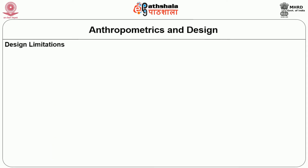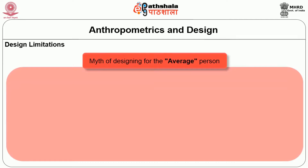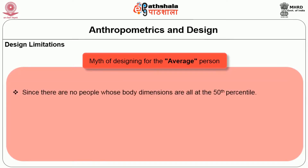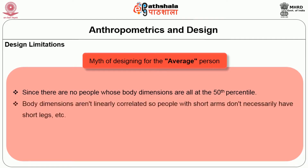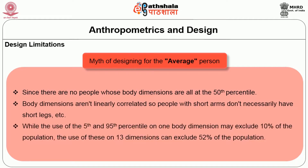What is the relationship between anthropometrics and design? First, let's understand design limitations. There is a myth of designing for the average person, since there are no people whose body dimensions are all at the 50th percentile — which is what we call the average. Body dimensions are not linearly correlated, so people with short arms do not necessarily have short legs. Using the 5th and 95th percentile on one body dimension may exclude 10% of the population, but using these on 13 dimensions can exclude 52% of the population.